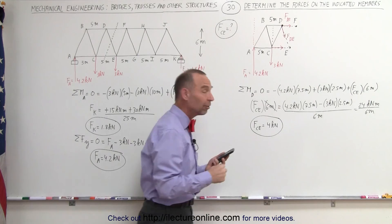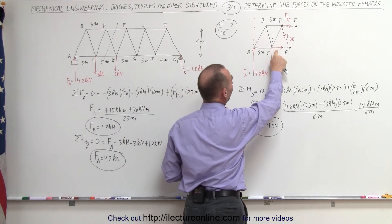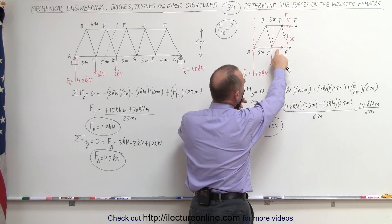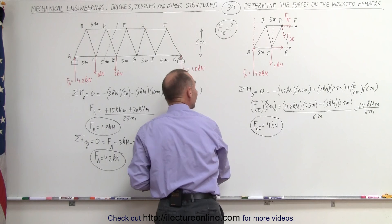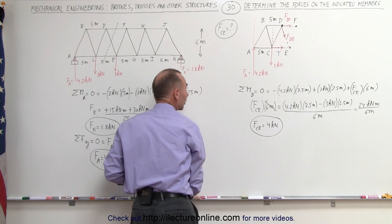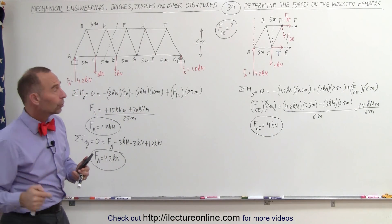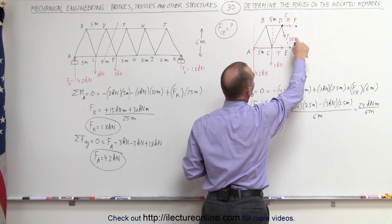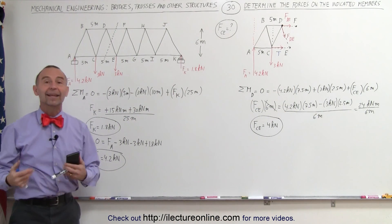Notice the answer is positive, which means the direction of the force is as assumed — this is a force of tension, because the member is pulling away from joint C. So this member is under tension in this structure. In the next video, we'll tackle the next two members and figure out F_DF and F_DE.